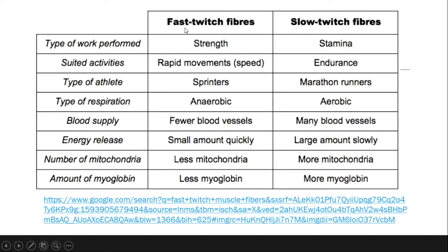Fast twitch fibers are responsible for strength, while slow twitch fibers are for stamina or endurance. Fast twitch fibers are responsible for strength and rapid movements — primarily used by sprinter athletes. Remember: fast twitch is for power, slow twitch is for endurance or stamina. Sprinter athletes use fast twitch fibers because they need strength, power, and speed immediately. Unlike marathon runners, who don't require strength but require endurance or stamina — so they primarily use slow twitch fibers. That's the composition of their muscles.